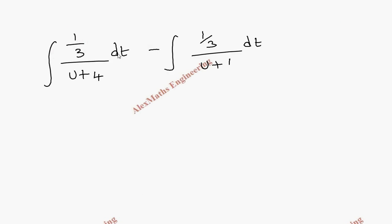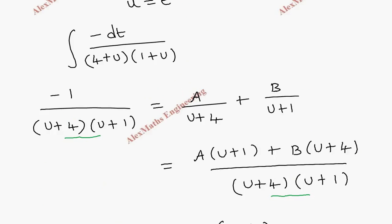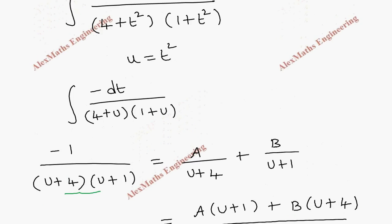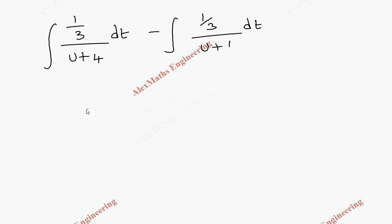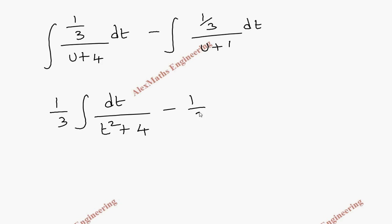Since the integration is with respect to t, we replace u with t². This gives: (1/3) integral dt/(t² + 4) minus (1/3) integral dt/(t² + 1).